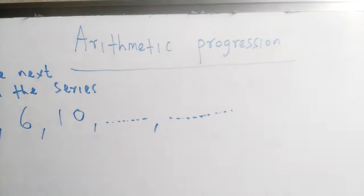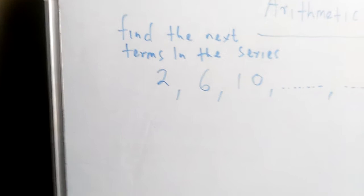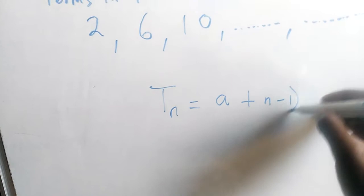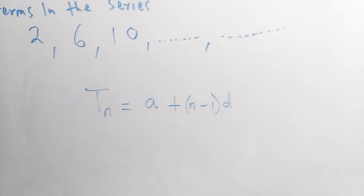But in this case, we've come up with a formula. The term that you want, we'll call it T sub n. It equals the first number A, plus the number you want take away 1, multiplied by the common difference.